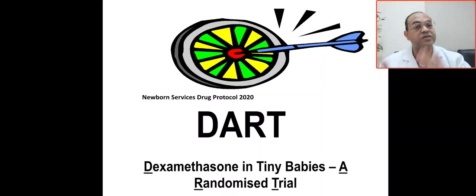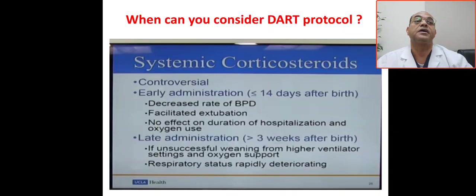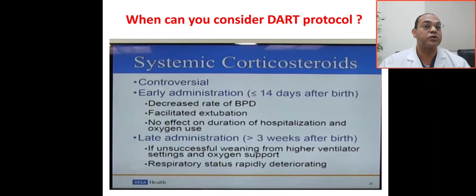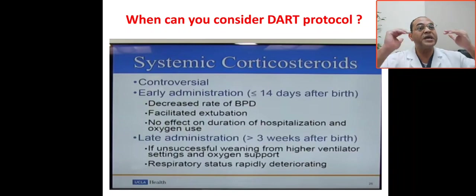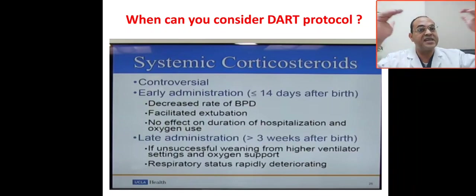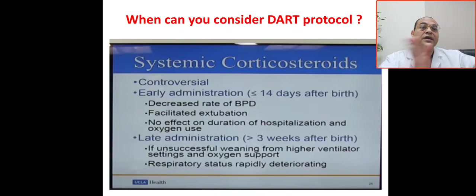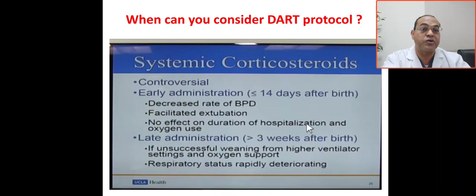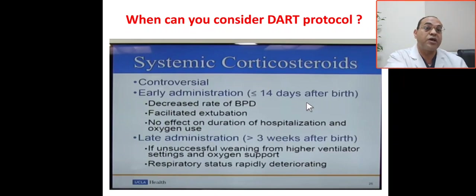So this is Dexamethasone in tiny babies meta-analysis randomized trial. When can we consider DART protocol? This is a systemic corticosteroid — actually it's controversial. There are two big meta-analyses. The first meta-analysis is early administration of Dexamethasone or systemic corticosteroid, meaning less than 14 days after birth. And late administration of Dexamethasone will be more than three weeks after birth.